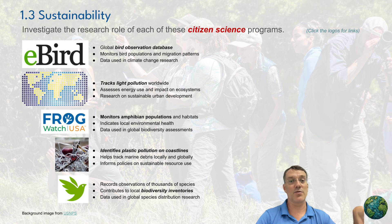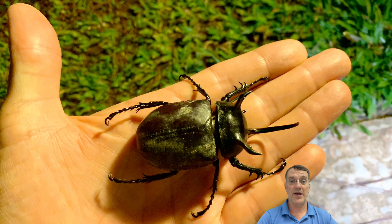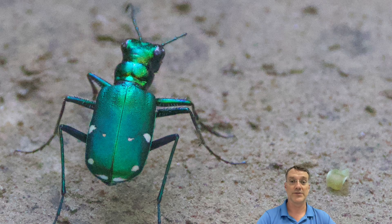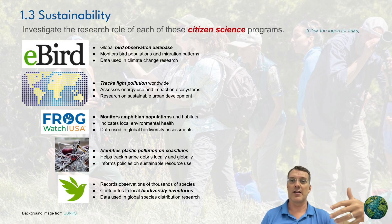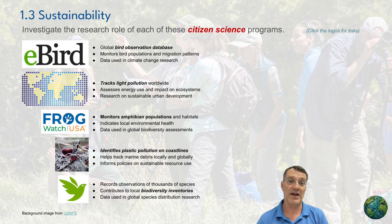Another great citizen science project is called iNaturalist. It allows people to record observations of thousands of species of any kind, uploading them to a database that contributes to the biodiversity inventories used by scientific researchers at universities around the world. These programs not only provide valuable data, but they also help raise awareness about sustainability issues to the general public.